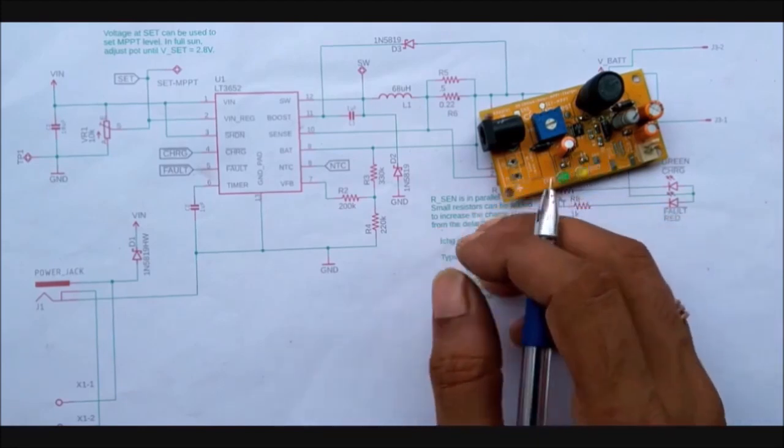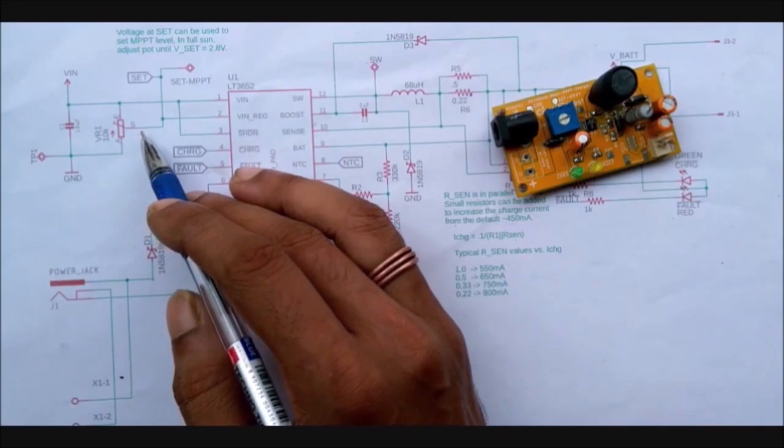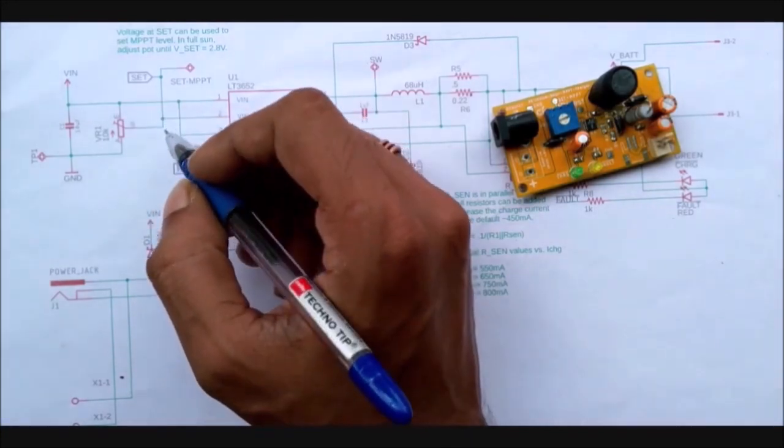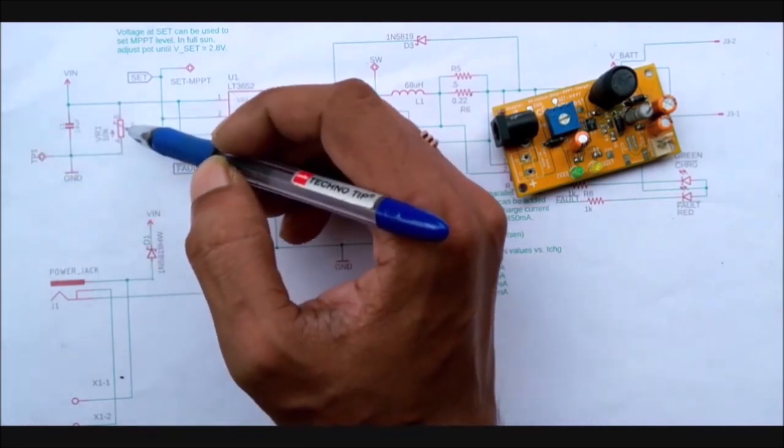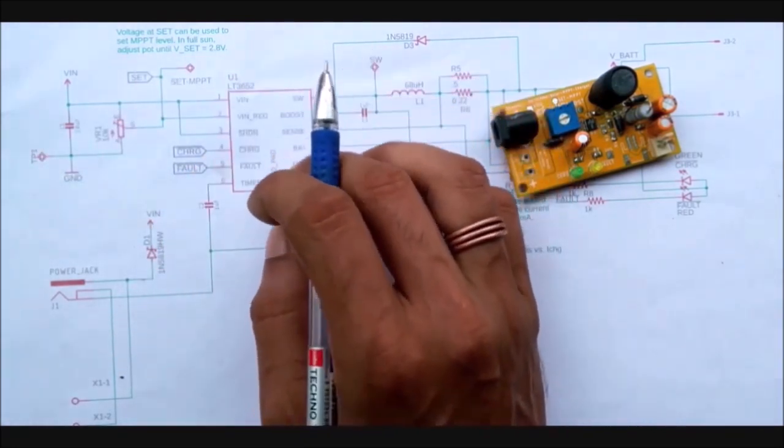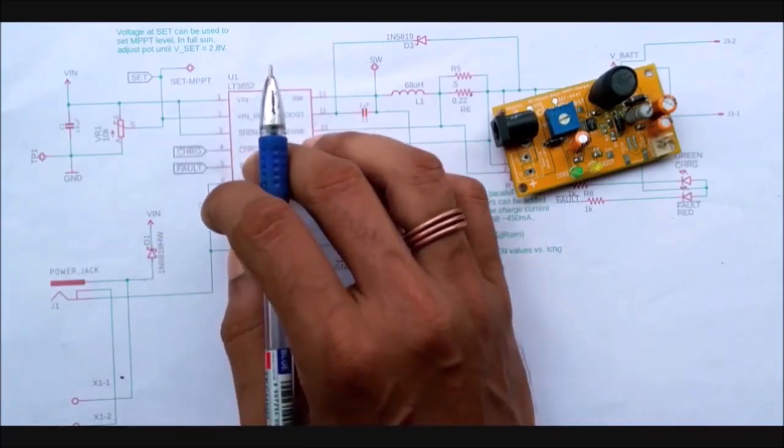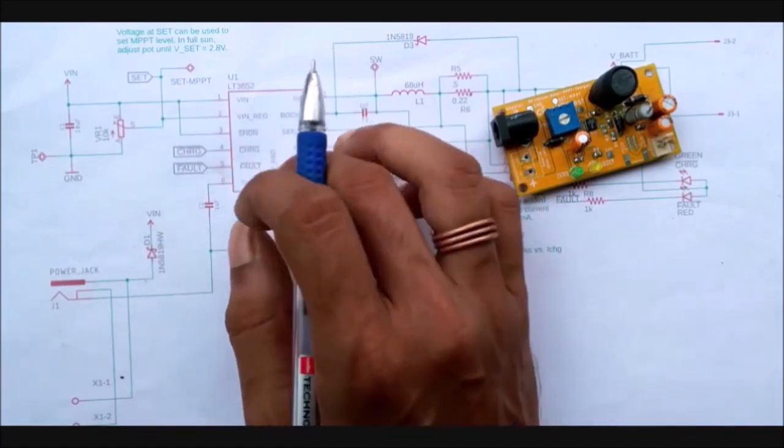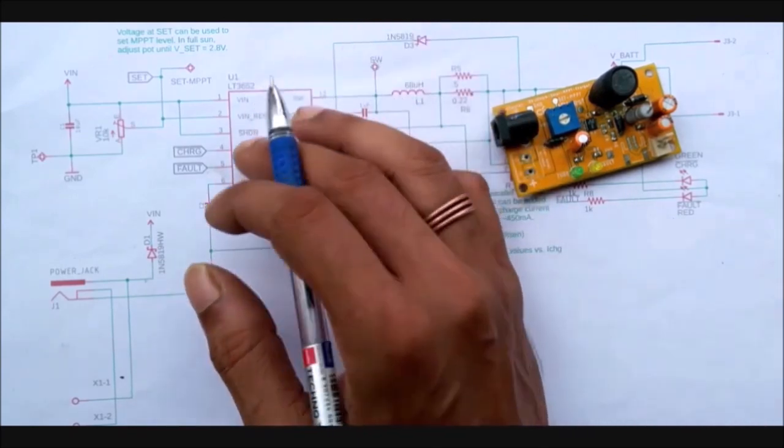One important thing to understand here is about setting the MPPT value. The set voltage over here is 2.8 volt whenever the panel is connected a voltage will appear across this port. The driver IC should know when the solar is in maximum power and we will provide that by controlling the potentiometer. Then if the solar energy drops the controller will adjust its charging voltage based on the value that we set earlier.